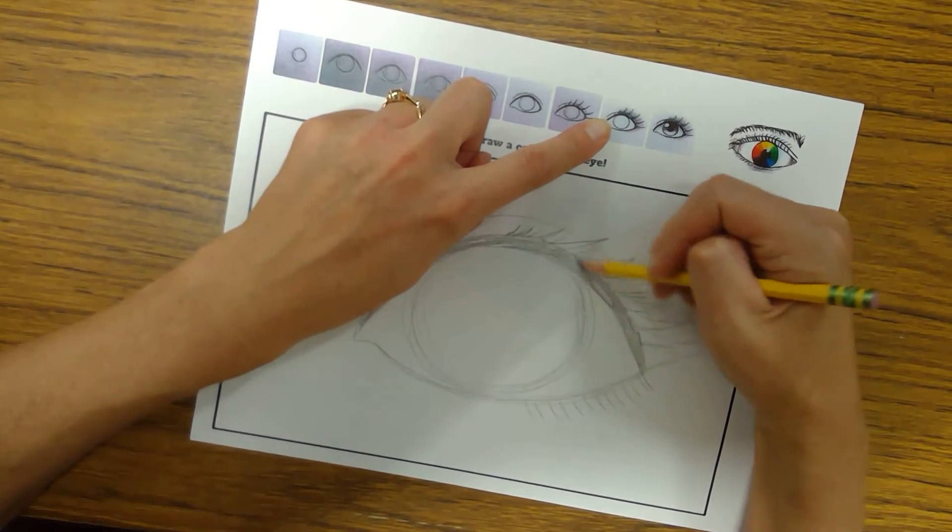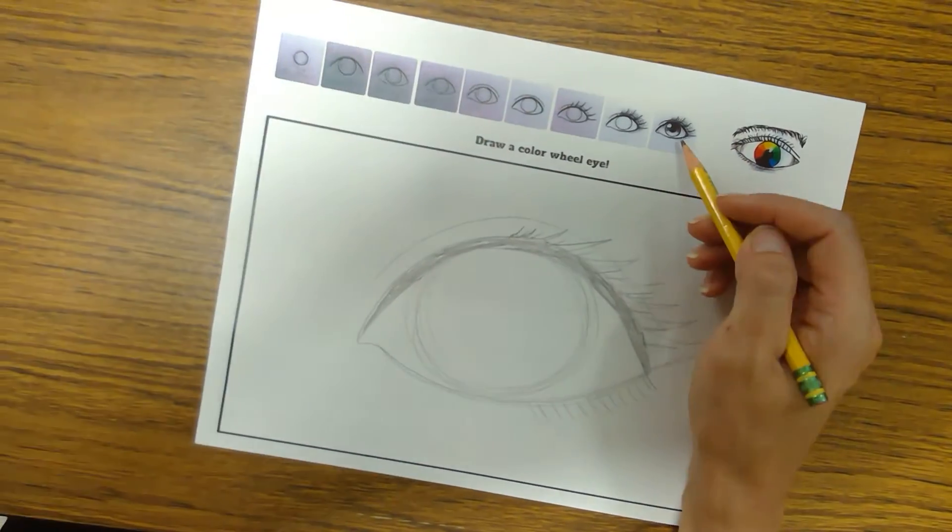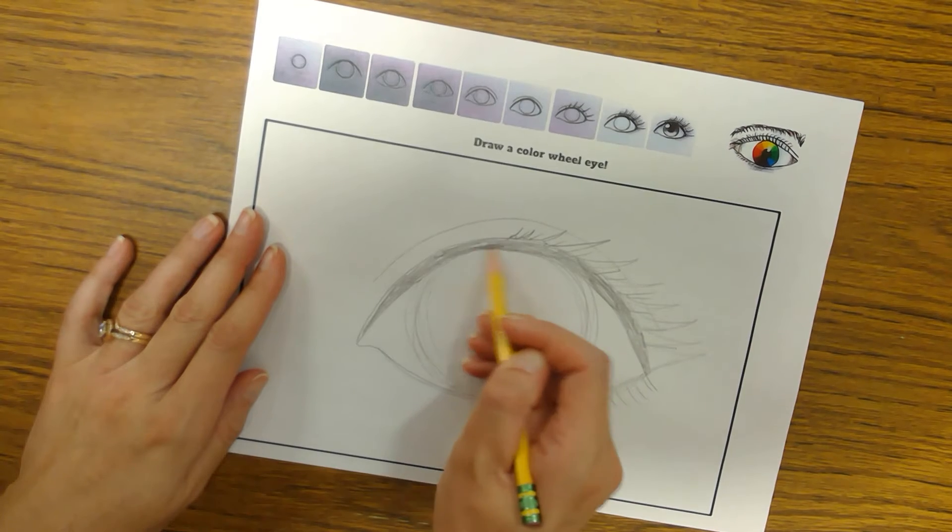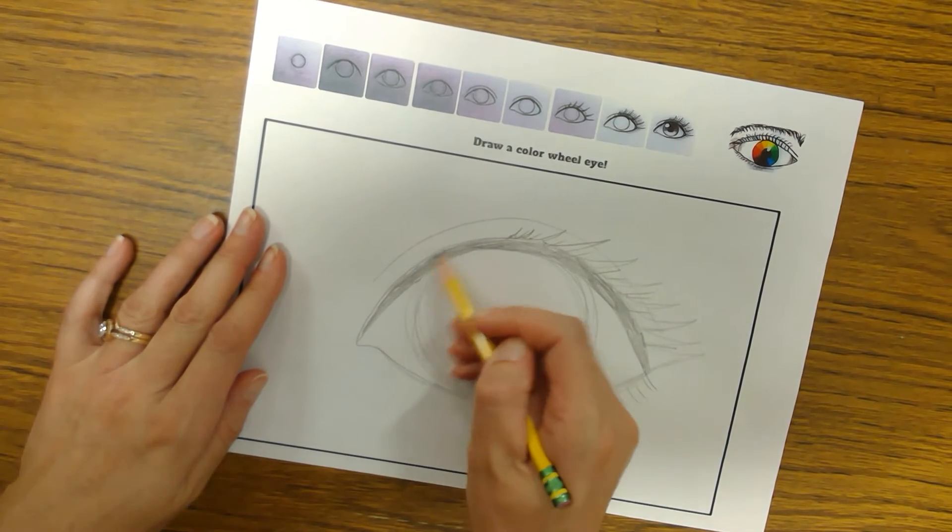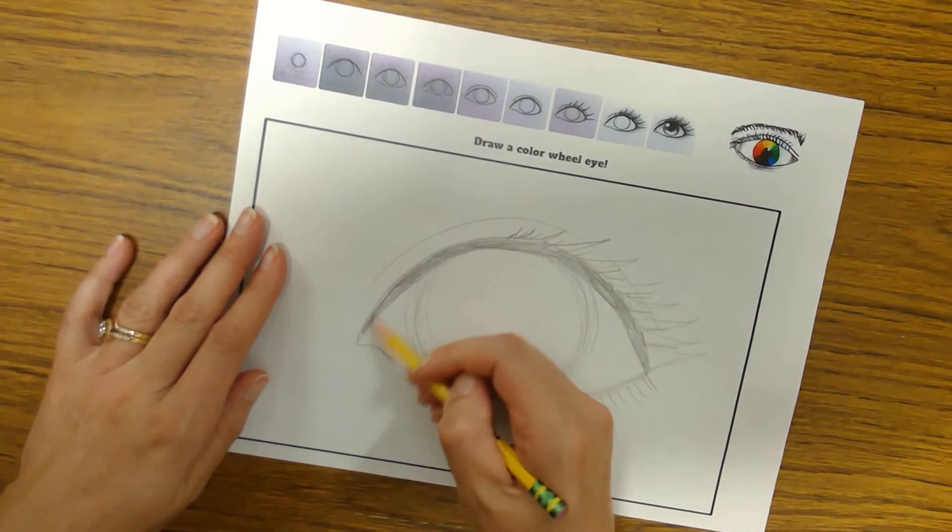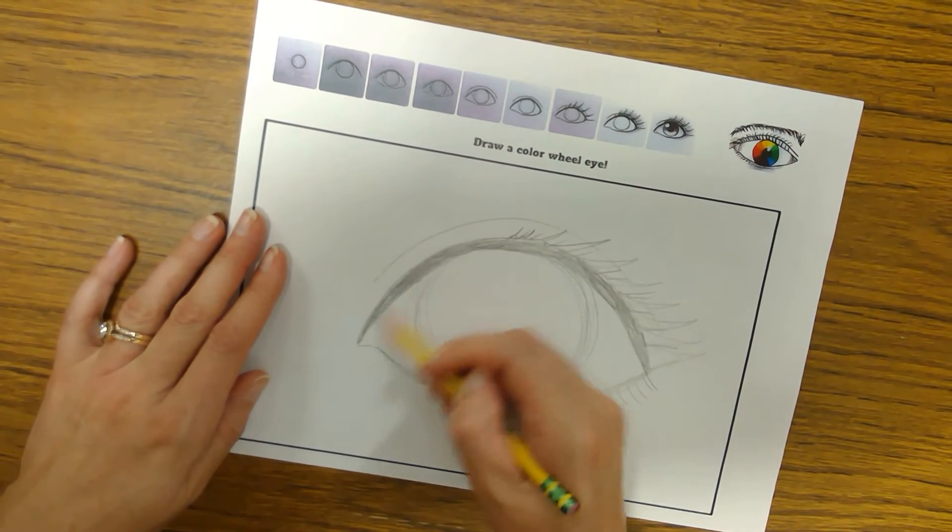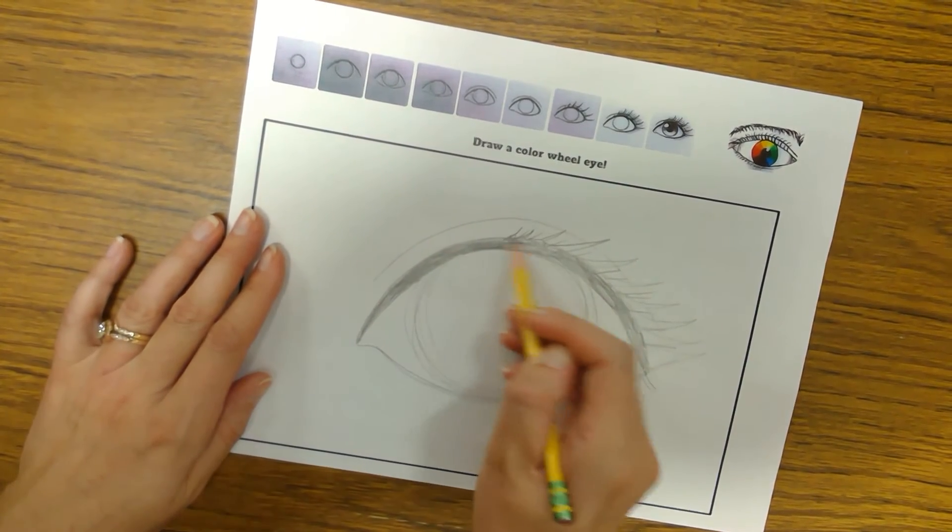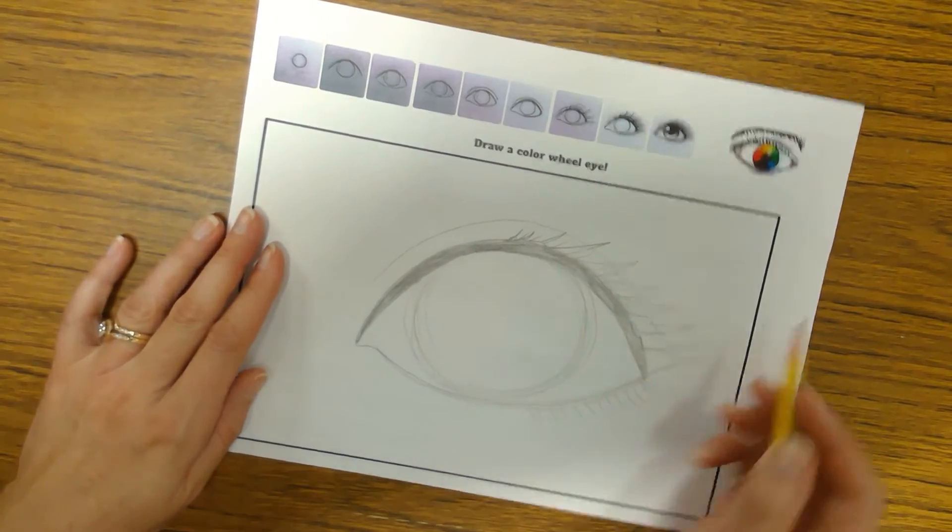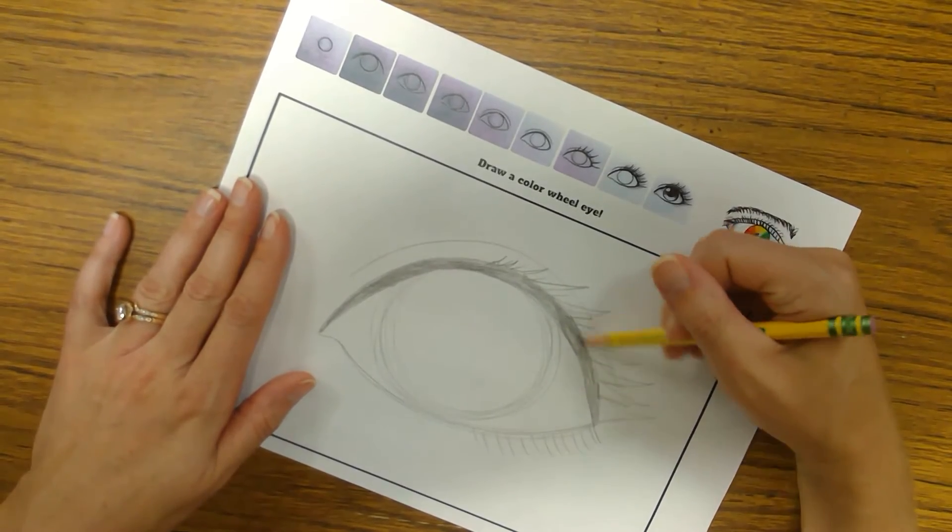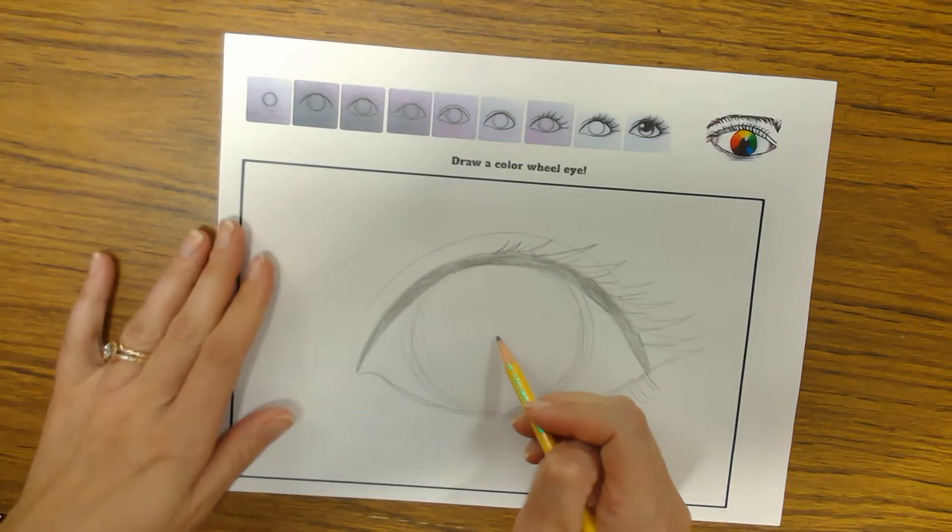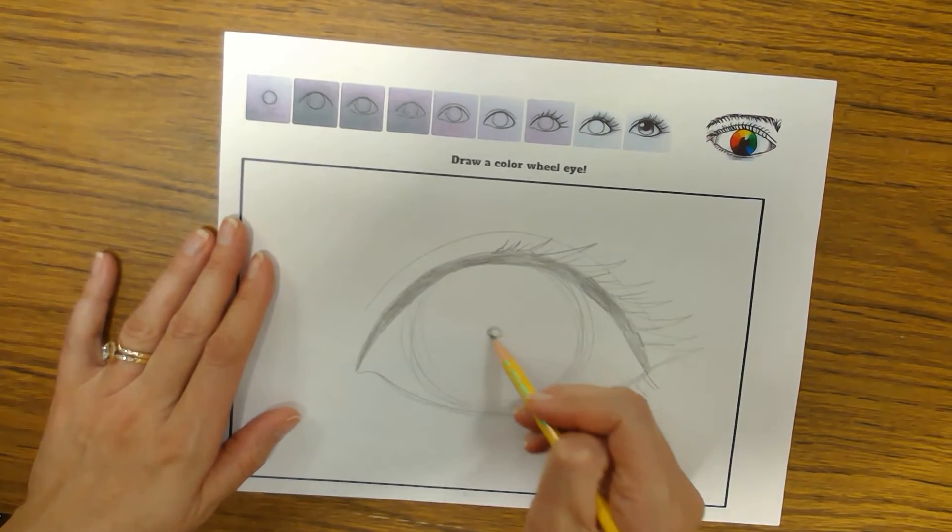Here's the part where you may need to listen to some helpful hints. So now we have the pupil, which is the black dot, and then the iris. The iris is the color part of the eye, and in this case, that is what the color wheel is made up of. We're not going to do the pupil first like we normally do, but what I'm going to do is I'm just going to put a little dot here in the middle.